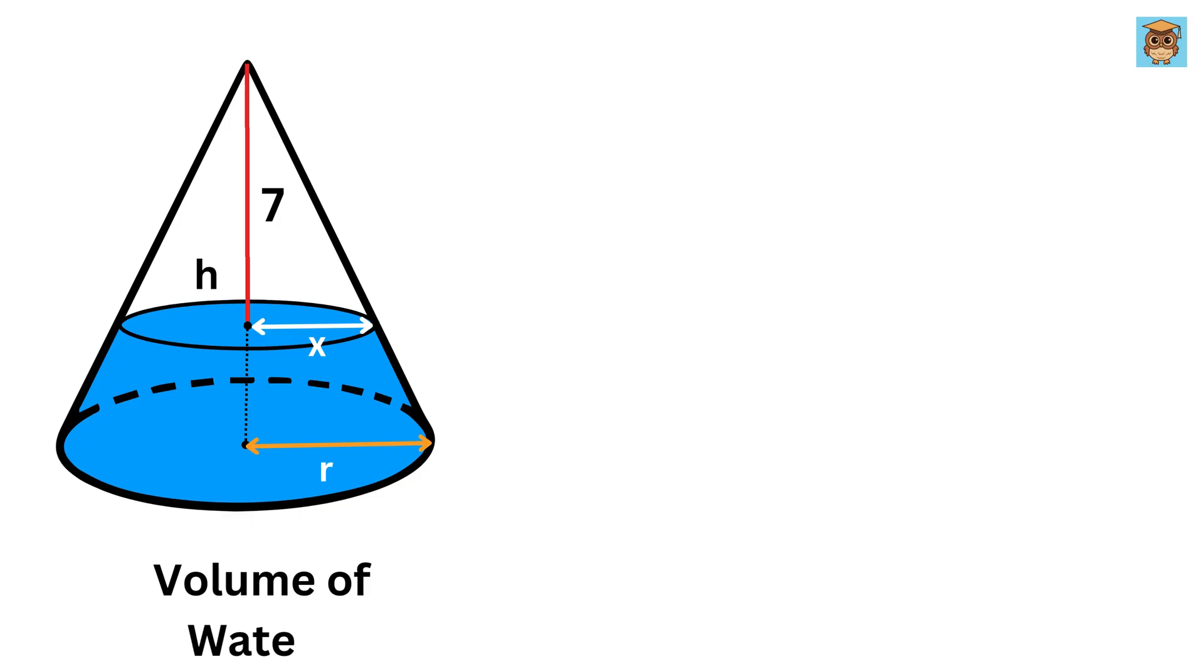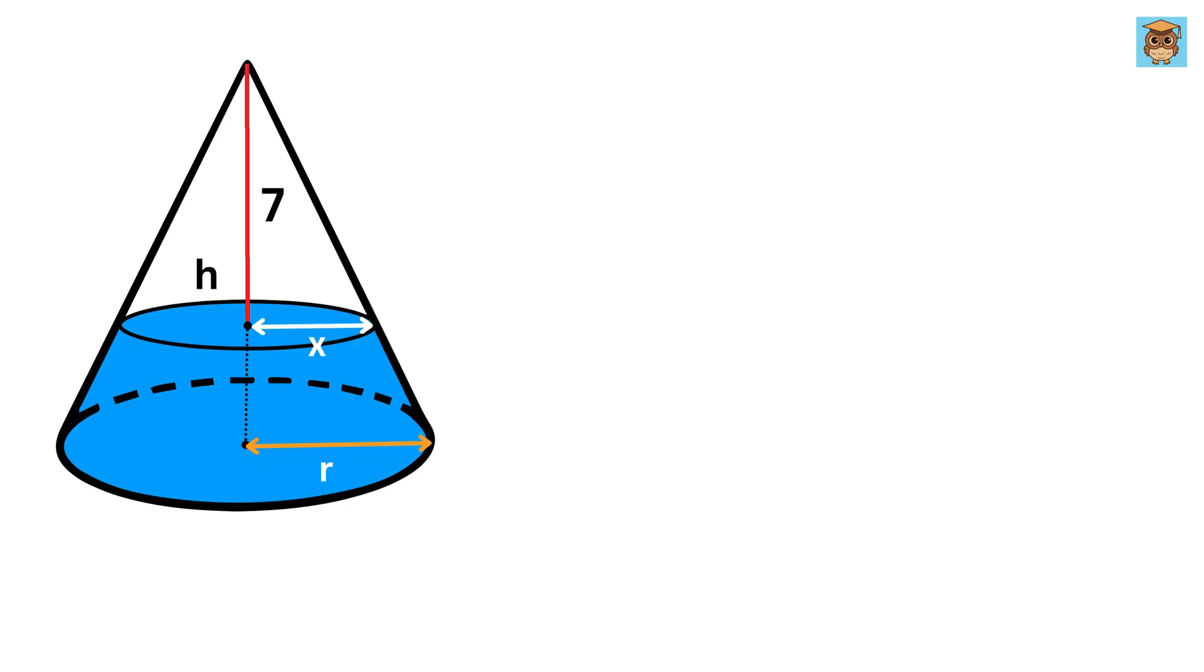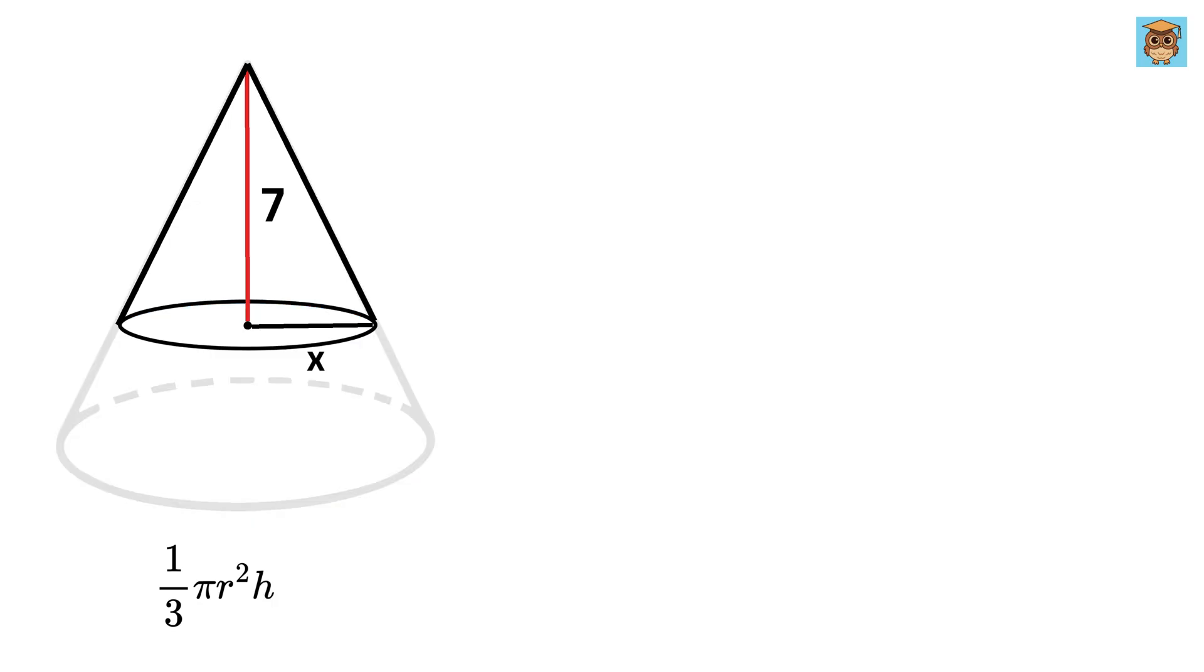Now what will be the volume of the water? It will be equal to the volume of the big cone minus the volume of the small empty cone at the top. We know that the volume of the big cone will be 1 by 3 times pi times R squared times H. The volume of the empty cone will be 1 by 3 times pi times X squared times the height of this small cone, which is 7.